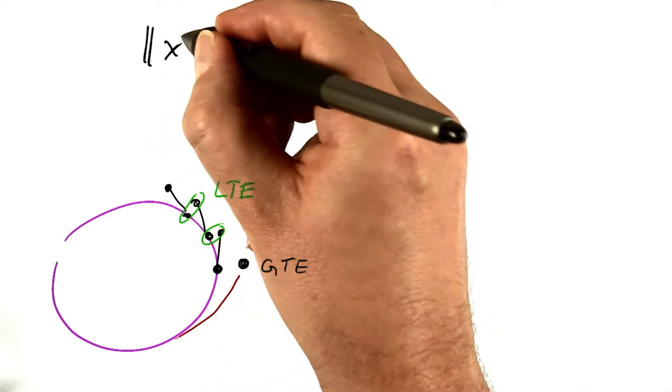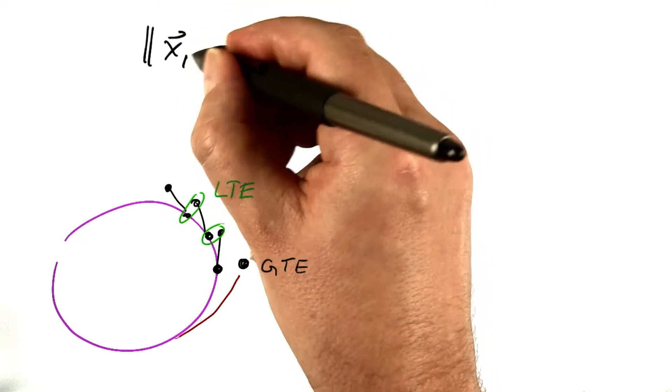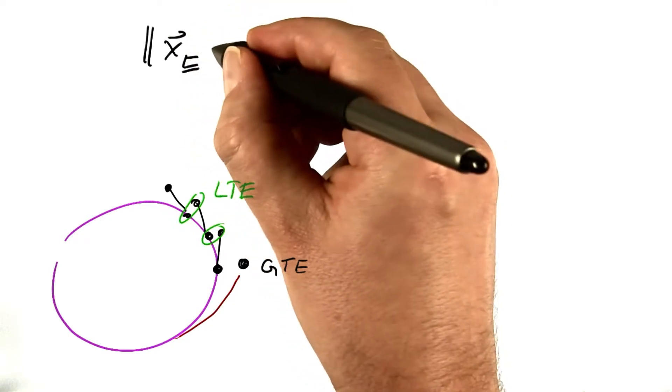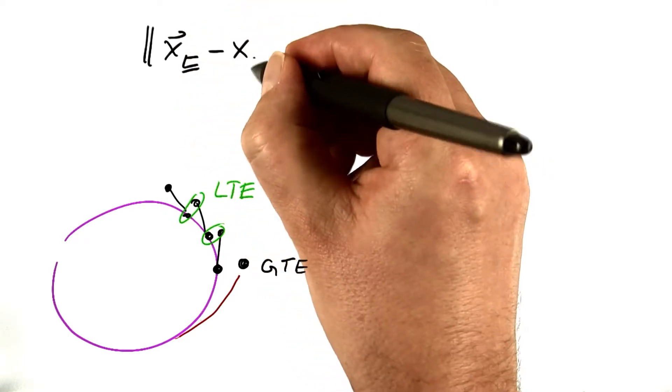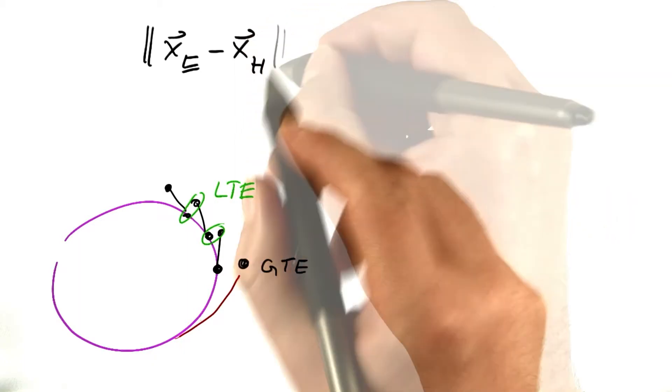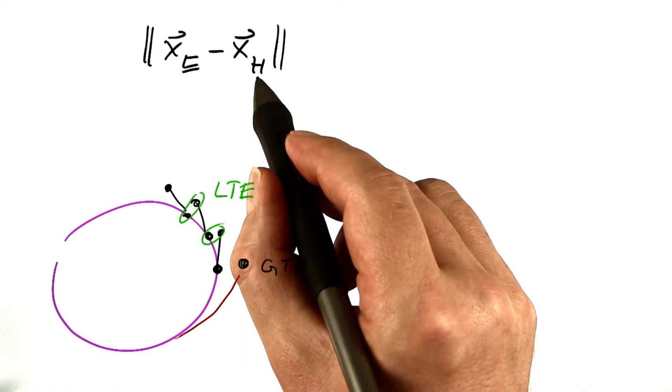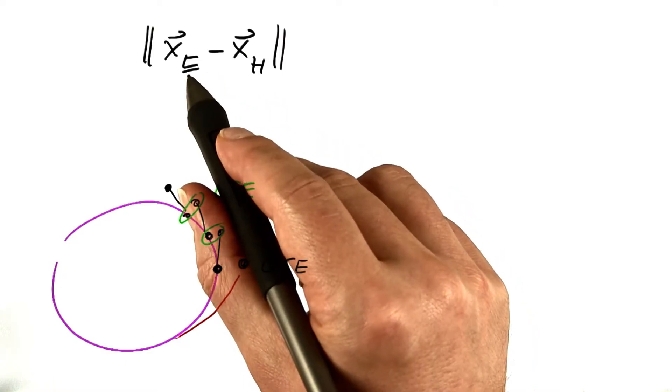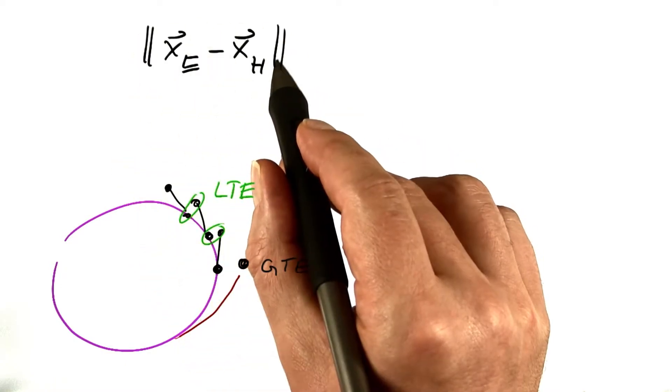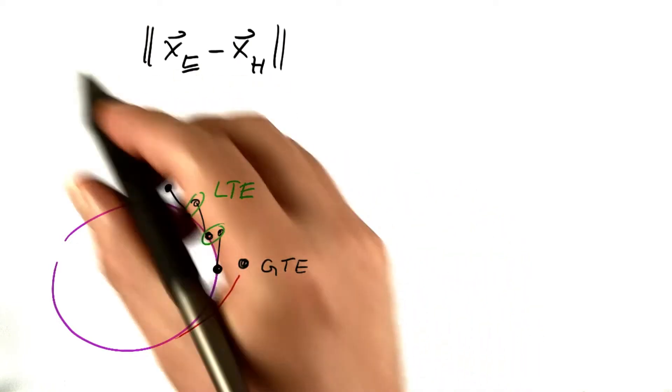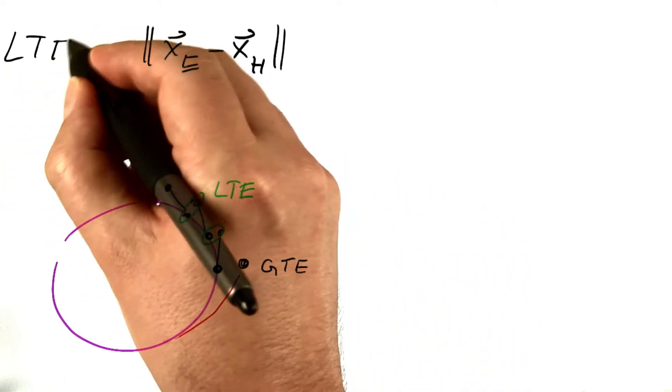Consider the distance between the Euler result for that step and the Heun's result for that step. As we saw earlier, Heun's result is much more accurate than Euler's result. So what we see here is about the error of Euler's method, the LTE of Euler's method.